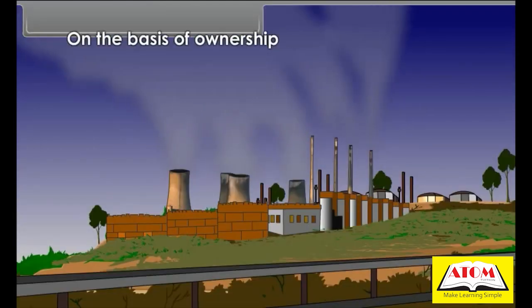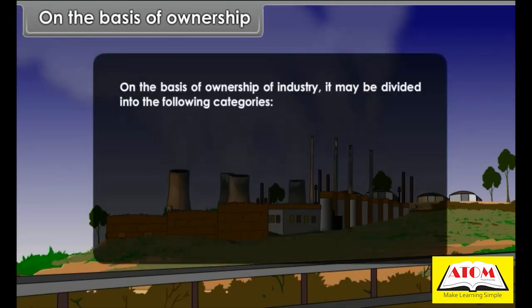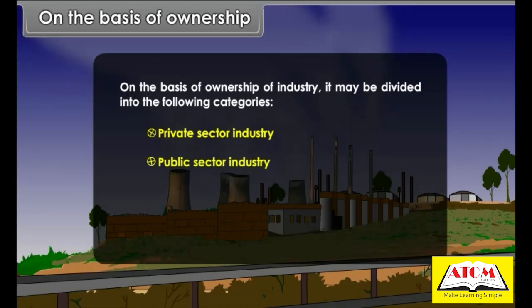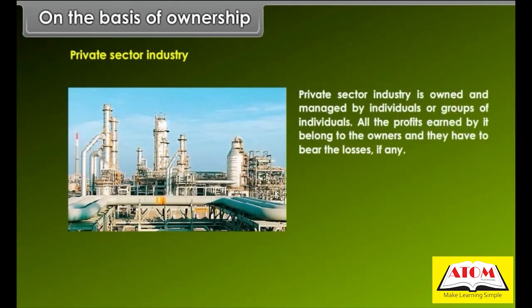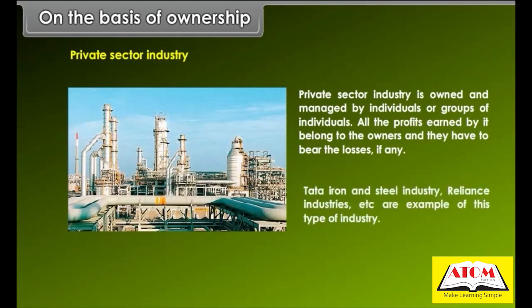On the basis of ownership, industries are divided into private sector, public sector, joint sector, and cooperative sector industries. Private sector industry is owned and managed by individuals or groups of individuals. All profits belong to the owners, and they bear any losses. Tata Iron and Steel and Reliance Industries are examples.